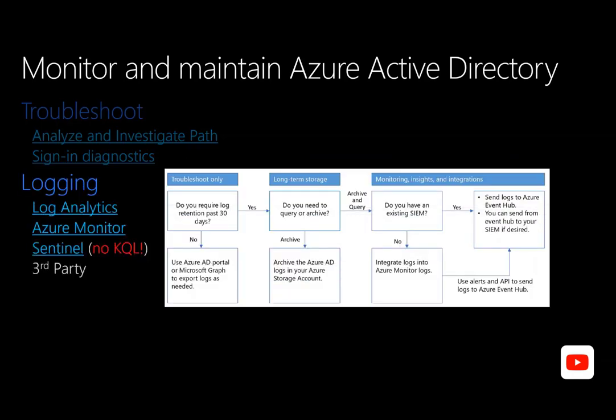Azure Active Directory log analytics views help you analyze and search the Azure AD activity logs in your tenant. Azure AD activity logs include audit logs — the audit logs activity report gives you access to the history of every task performed in your tenant — and sign-in logs, which let you determine who performed the tasks reported in the audit logs. You can also use Azure Sentinel's built-in connector to collect data from Azure Active Directory and stream it into Azure Sentinel. The connector allows you to stream sign-in, audit, and provisional log types.